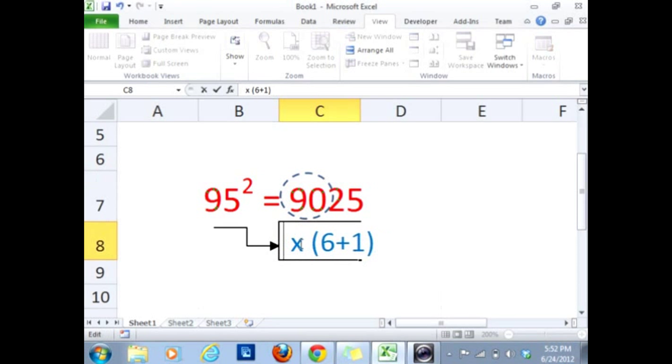So here it will be 9 into 9 plus 1. So this is a quick way where we can square any number which ends with 5 without using any calculator and in a few seconds. I hope this tutorial will help. Thank you.